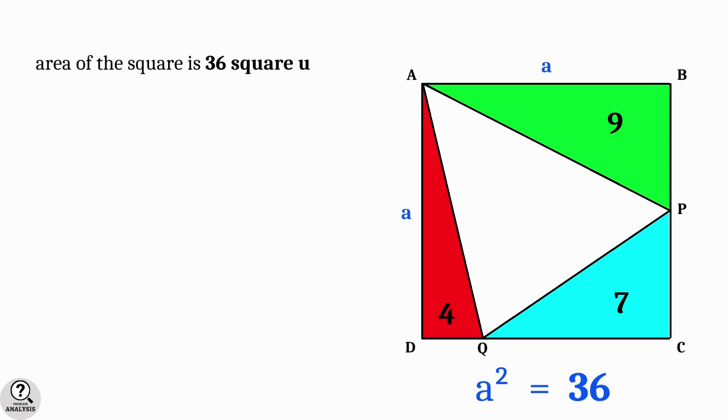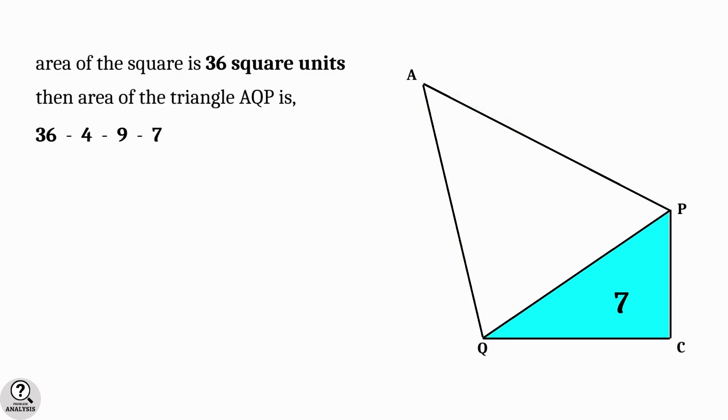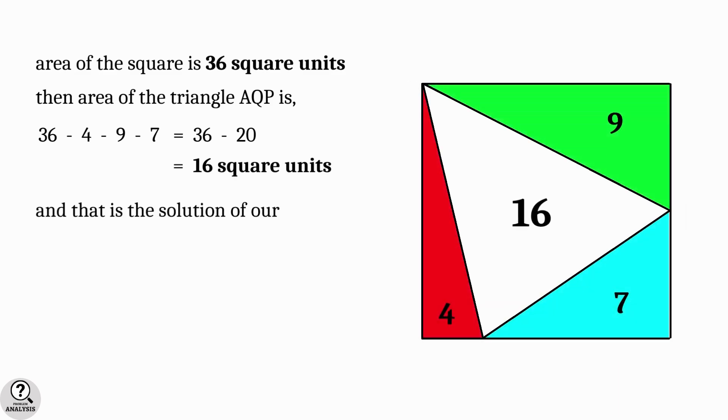Now we are almost done. What we have to find is the area of white triangle, which is obtained by subtracting 4, 9 and 7 from 36. That gives 36 minus 20 equal to 16 square units. And that is the solution we are looking for.